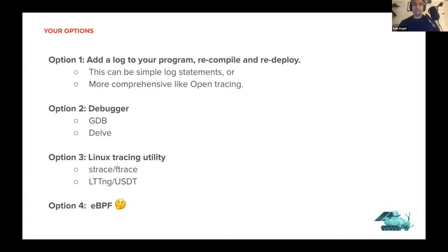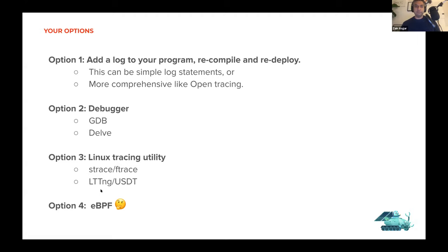Option one: just give up, go add some printfs, recompile and redeploy your code. You can also consider using something more comprehensive like open tracing, which helps you do similar things to logging but you can get information across many different servers. Option two: give up on reliability and go with GDB and Delve on production code. Option three: there are Linux-based utilities — strace, ftrace, LTTNG, and USDT. Some of these technologies are things that debuggers are built on. They work, and you can automate them so they don't stop execution, but they tend to be pretty slow.